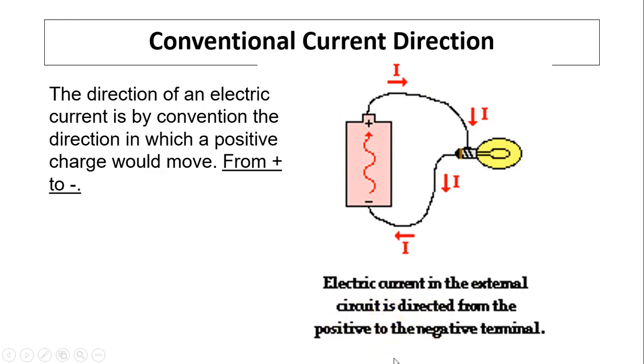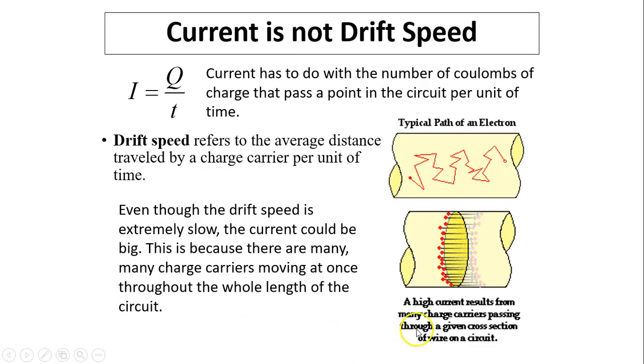Current is not drift speed. This can be confusing because current is a rate quantity. The rate quantity is not how fast it goes, but how many numbers of charges go. Current has to do with the number of coulombs of charge that pass a point in the circuit per unit of time. Drift speed refers to the average distance traveled by the charge carrier per unit of time. So the two are different.